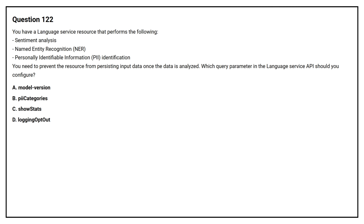Option A: Model Version. Option B: PII Categories. Option C: Show Stats. Option D: Logging Opt-Out. The correct answer is Option D: Logging Opt-Out.